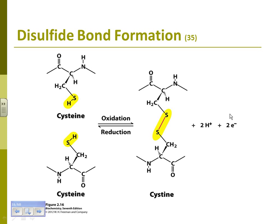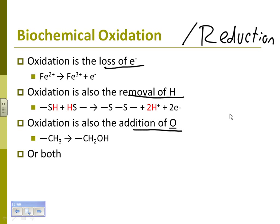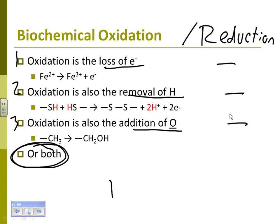This shows the oxidation and reduction of the cysteine SH group. The three ways of oxidation: you can lose electrons, remove hydrogen, or add oxygen. For reduction, it's the reverse: gaining electrons, gaining hydrogen, or subtracting oxygen. It could be any combination — it just needs to meet one of those three criteria to be an oxidation reaction. This will commonly be abbreviated as a redox — oxidation-reduction reaction.